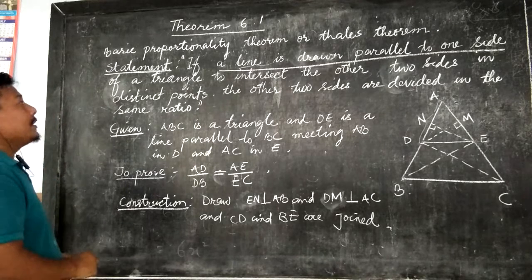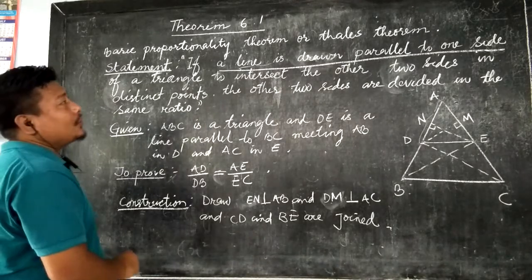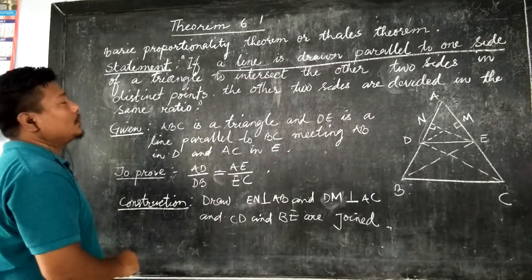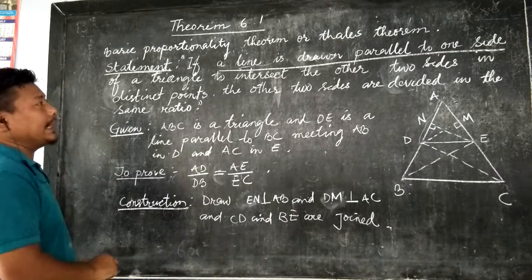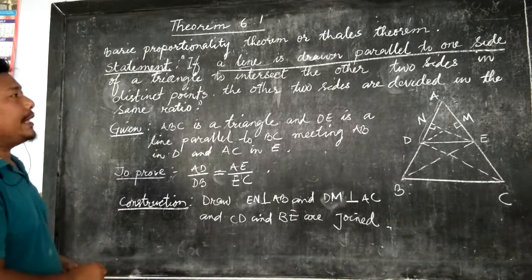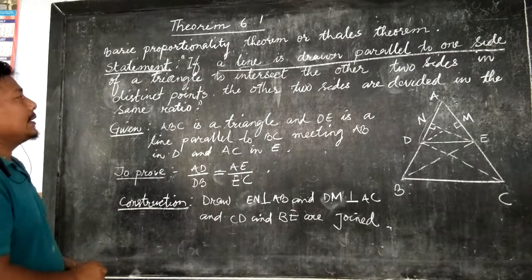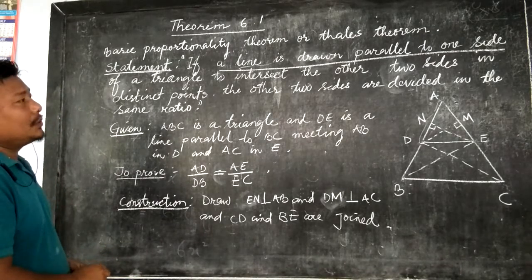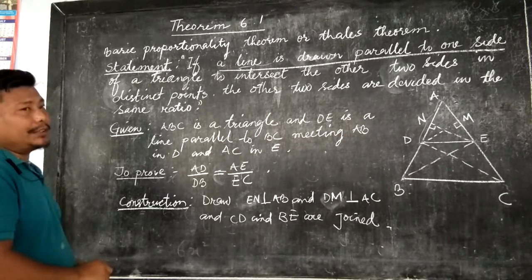The statement of the theorem is: if a line is drawn parallel to one side of a triangle to intersect the other two sides in distinct points, the other two sides are divided in the same ratio.